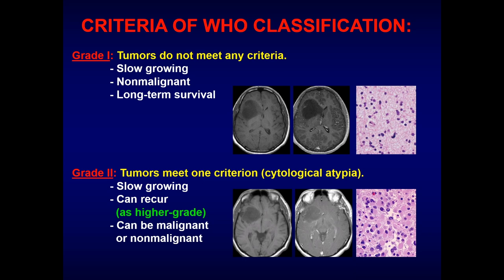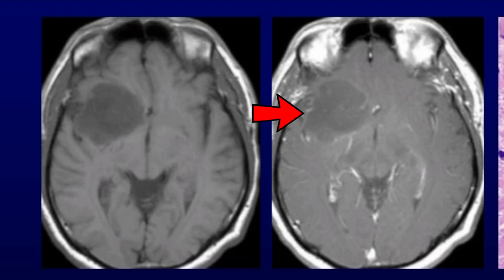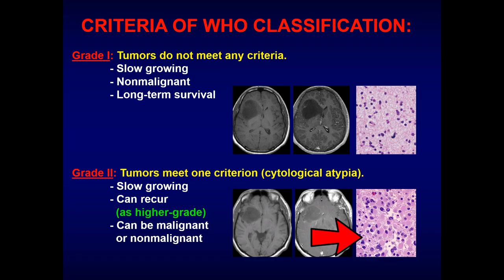In grade 2 WHO classification, there is one criterion — generally cytological atypia. These tend to be slightly more aggressive but overall prognosis is still good. They can be both malignant and non-malignant and may or may not recur after treatment. Here is a similar tumor in the right frontal subcortical region, but on post-contrast imaging there is a very faint enhancement. There is not much peritumoral edema, and the blue has increased compared to grade 1.